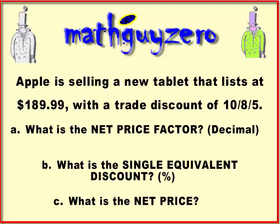Here's the example: Apple is selling a new tablet that costs $189.99, and they're offering a trade discount of 10-8-5. So the net price factor is calculated thusly.